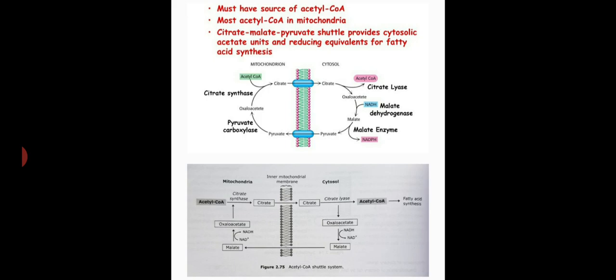The acetyl group passes out of the mitochondria as citrate. Within the mitochondria, acetyl coenzyme reacts with oxaloacetate to form citrate in a reaction catalyzed by citrate synthase. Under conditions where acetyl coenzyme A and ATP are high in concentration, citrate leaves across the mitochondria, and in the cytosol it reacts with cytosolic coenzyme A and ATP to form acetyl coenzyme A and oxaloacetate in a reaction catalyzed by citrate cleavage enzyme, citrate lyase.